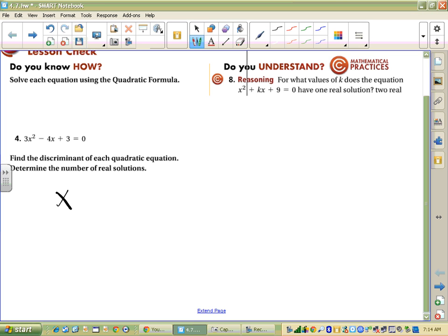If you started number 4 by using the quadratic formula, that's okay, I guess. We get negative 4, or the opposite of negative 4, plus or minus the square root of negative 4 squared minus 4 times 3 times 3. All that's divided by 2 times a, so 2 times 3.